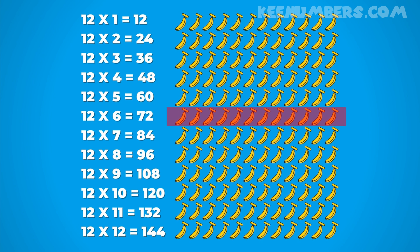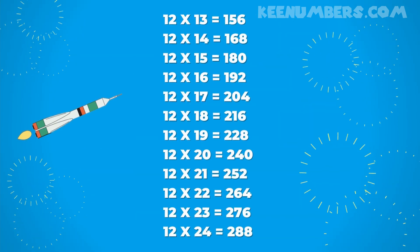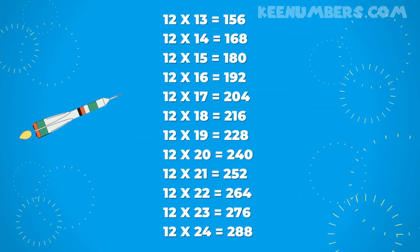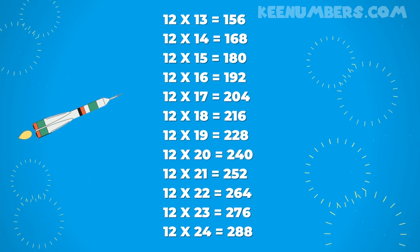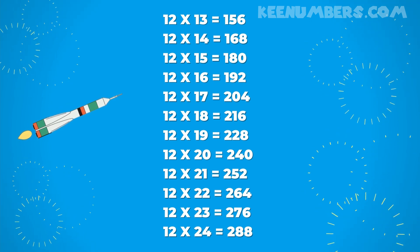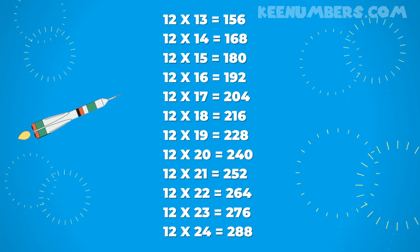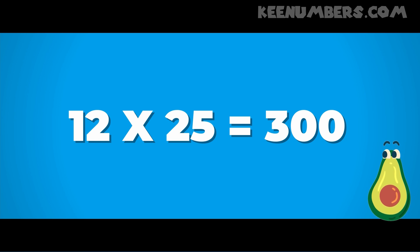That's a lot of bananas, and we are counting rows of bananas — in each row we have 12 bananas. 12 13s is 156. 12 14s is 168. 12 15s is 180. 12 by 16 is 192. 12 times 17 is 204. 12 by 18 is 216. 12 by 19 is 228. 12 by 20 is 240. 12 times 21 is 252. 12 by 22 is 264. 12 by 23 is 276. 12 by 24 is 288. And 12 by 25 is 300 — just like we did in the song.